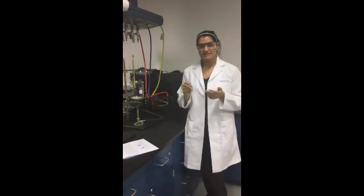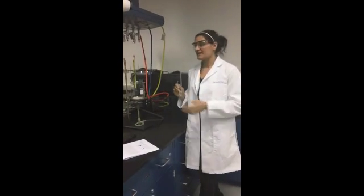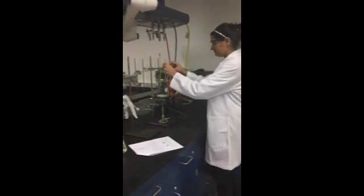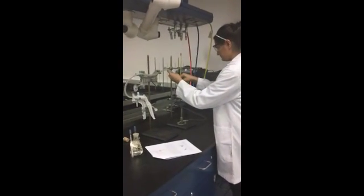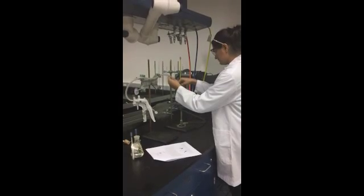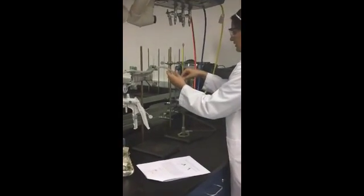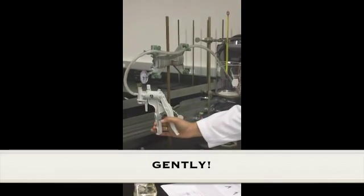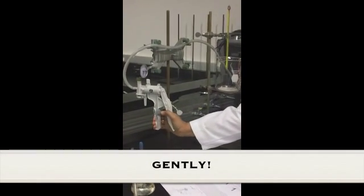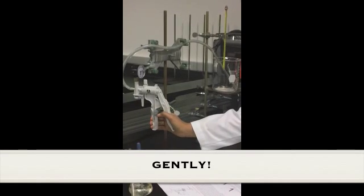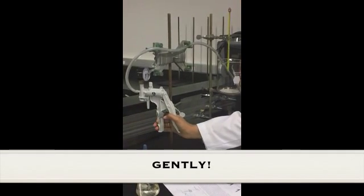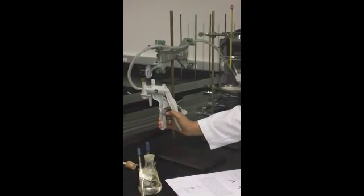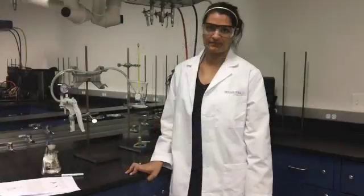You are then going to take your isoteniscope and attach it to the vacuum hose. Once you do this, you'll then pump air into it using the hand pump. And if you see some air bubbles expand, that is expected.